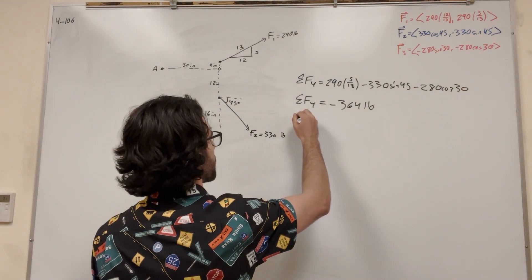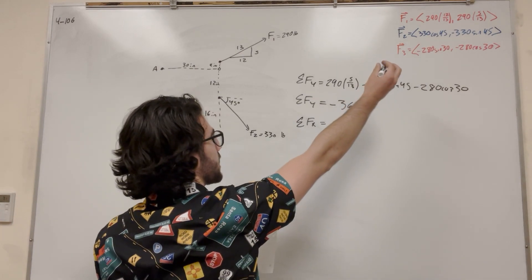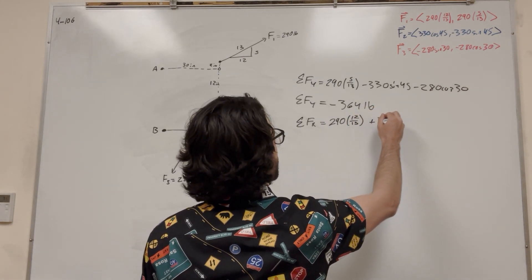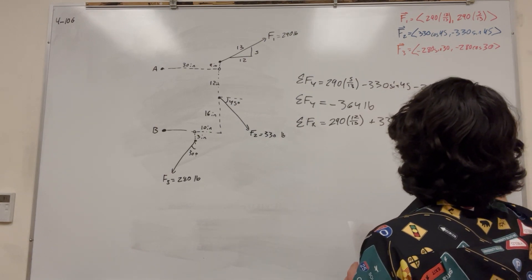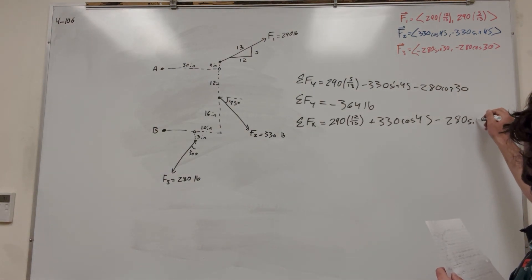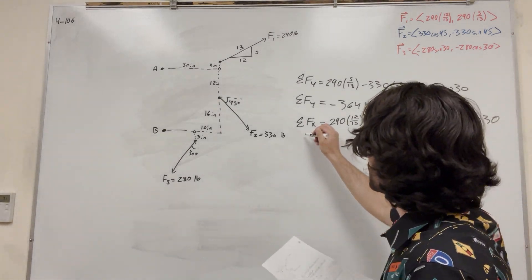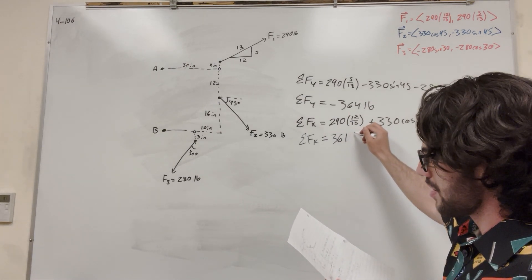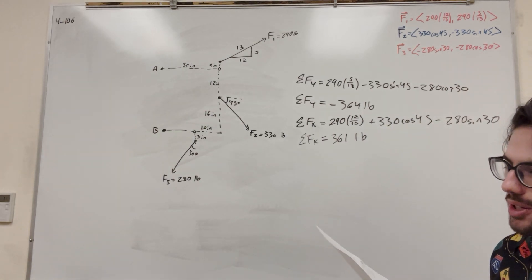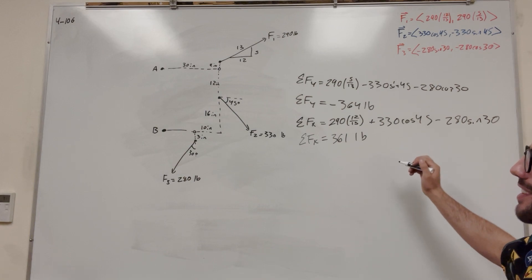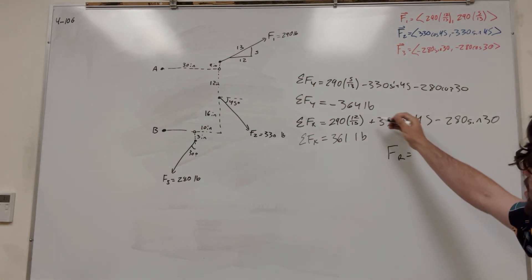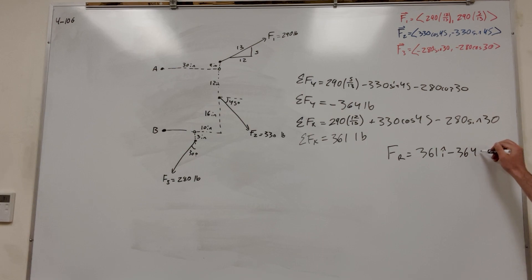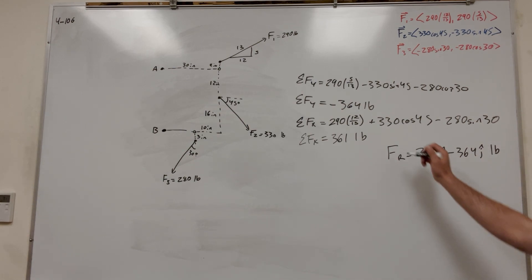So let's do it for X — sum of forces in the X direction. It's going to be 290 times 12/13, plus 330 cosine of 45, minus 280 sine of 30. The sum of forces in the X direction gives you 361 pounds. So our resultant force vector is equal to 361i minus 364j pounds. That's a vector.